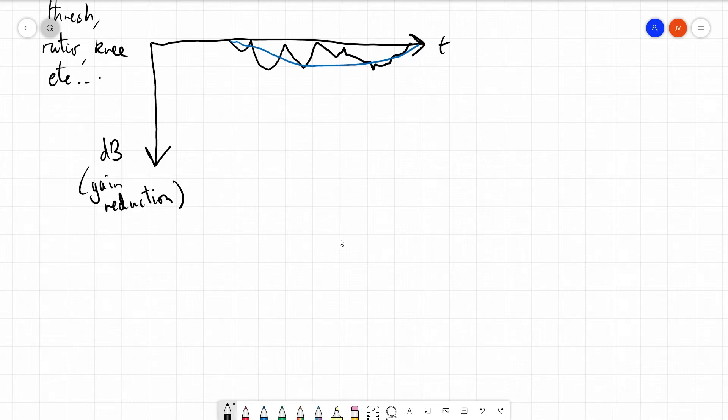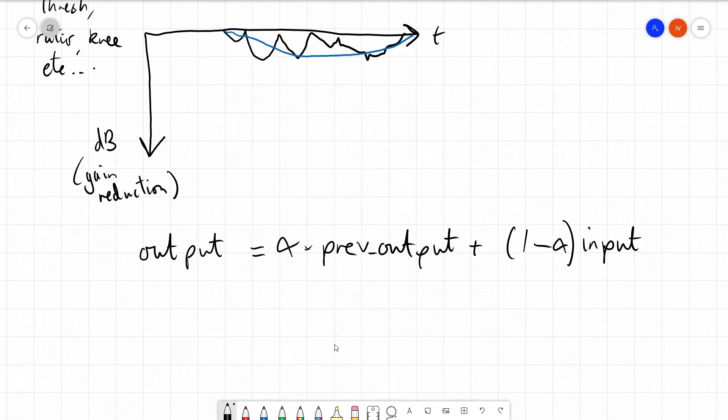How do we use this alpha value to smooth out our envelope of gain reduction? Well, for each audio sample over time, we say the output is equal to alpha times the previous output, plus one minus alpha times the input. So this is a single pole feedback filter, and you may recognize this as also being a low pass filter.